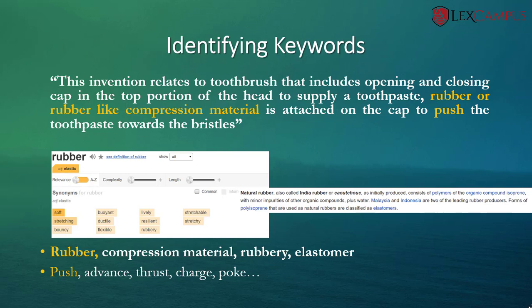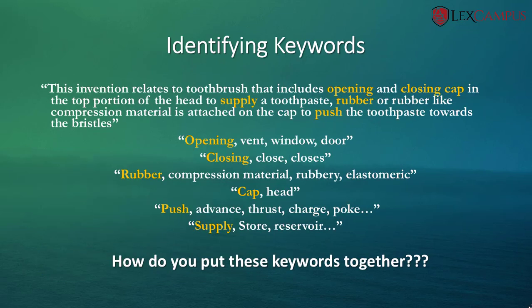With all the keywords in place, let us compare them with the disclosure that we have. The set of keywords are highlighted here: opening, closing, rubber, cap, push, and supply. So how do you put these keywords together?